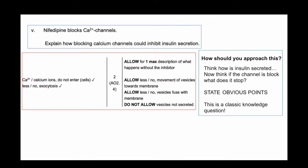Now this question says: This drug blocks calcium ion channels. Explain how blocking calcium channels could inhibit insulin secretion. This is the sort of question I love the most because if you've memorized the processes, then this is so easy. Remember, you must always memorize the processes because there's so many questions that come up in exam papers based on it.